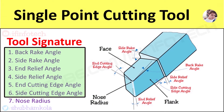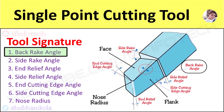The first angle is back rack angle. This angle is between the face of the single point cutting tool and a line parallel with the base of the tool, measured in a perpendicular plane through the side cutting edge.